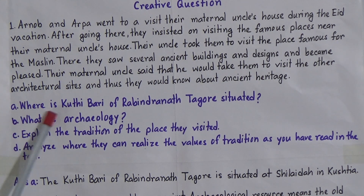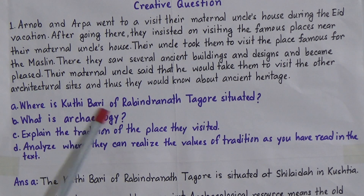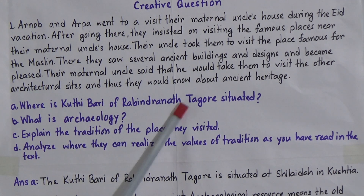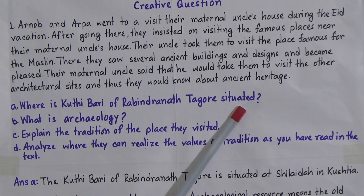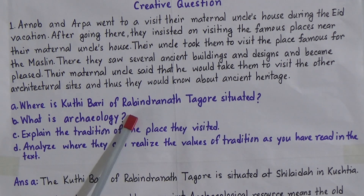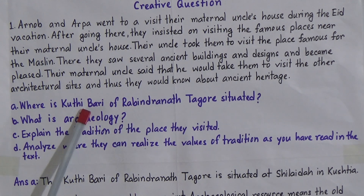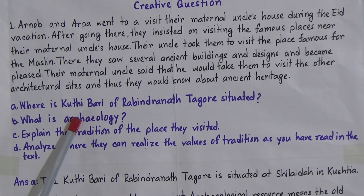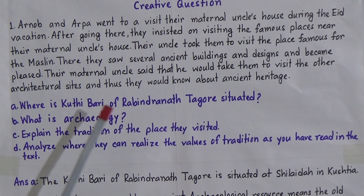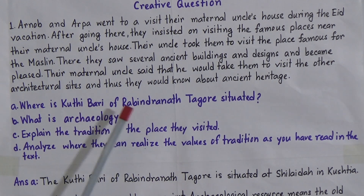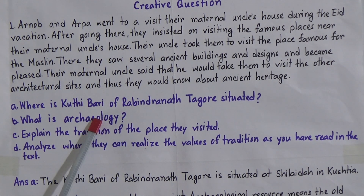Question number A: Where is Kuthibari of Rabindranath Tagore situated? This question carries one mark, and for one mark we will write one sentence. We all know that the Kuthibari of Rabindranath Tagore is situated in Kustia.